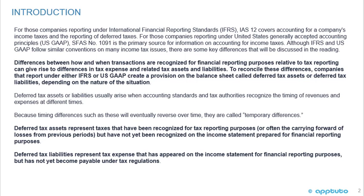For those companies reporting under International Financial Reporting Standards (IFRS), IAS 12 — International Accounting Standard 12 — covers the accounting for a company's income taxes and the reporting of deferred taxes. For those companies reporting under United States Generally Accepted Accounting Principles (U.S. GAAP), SFAS No. 109 is the primary source for information on accounting for income taxes. Although IFRS and U.S. GAAP follow similar conventions on many income tax issues, there are some key differences that will be discussed throughout this reading.